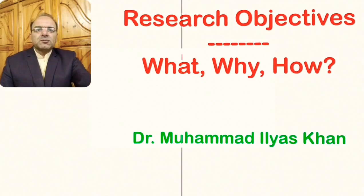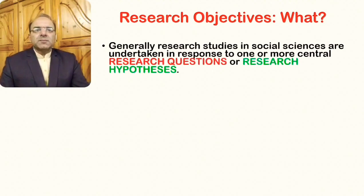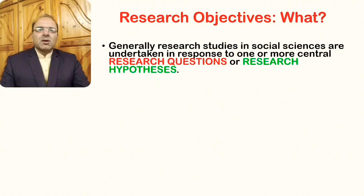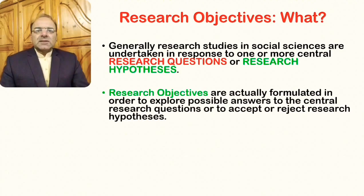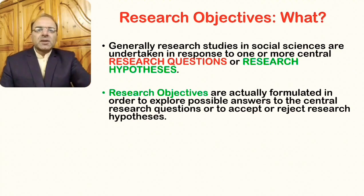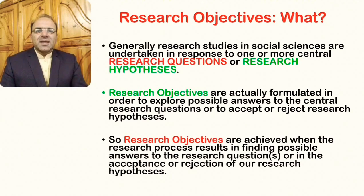Let us first begin with the 'what' question — what are research objectives? Generally, research studies in social sciences are undertaken in response to one or more central research questions or research hypotheses. Research objectives are formulated in order to explore possible answers to the central research questions, or to accept or reject research hypotheses. So the aim of the objectives is actually to find answers to our research questions or to accept or reject our research hypotheses.